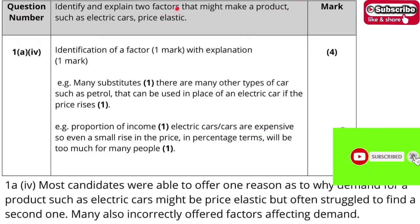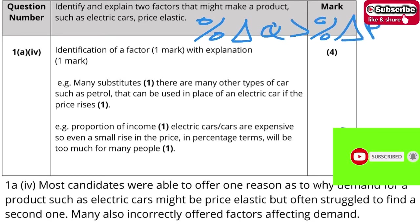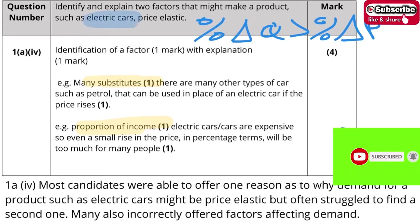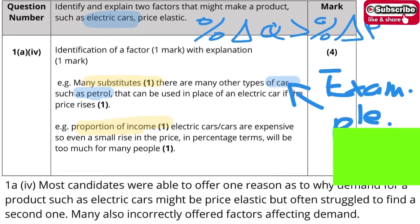Let's take a look at part A4. We have to identify two factors that make a product price elastic. First, define price elastic: the percentage change in quantity will be larger than the percentage change in price. Factors include: there are a lot of substitutes — for example, petrol cars are substitutes for electric cars. The second factor is the proportion of income. The larger the proportion of income a product takes, the more expensive it is for people, so they have to think more carefully about the purchase.